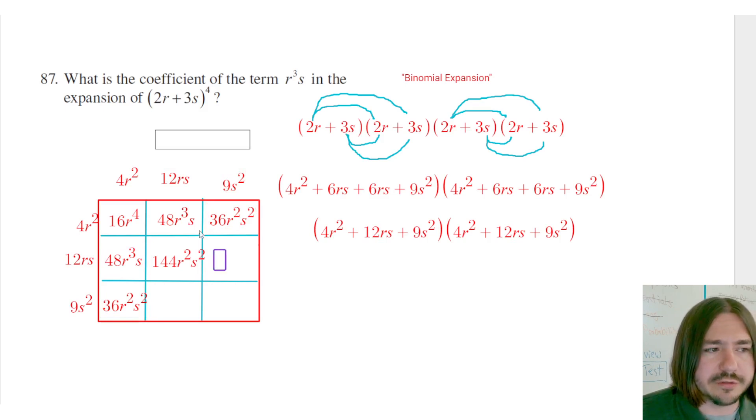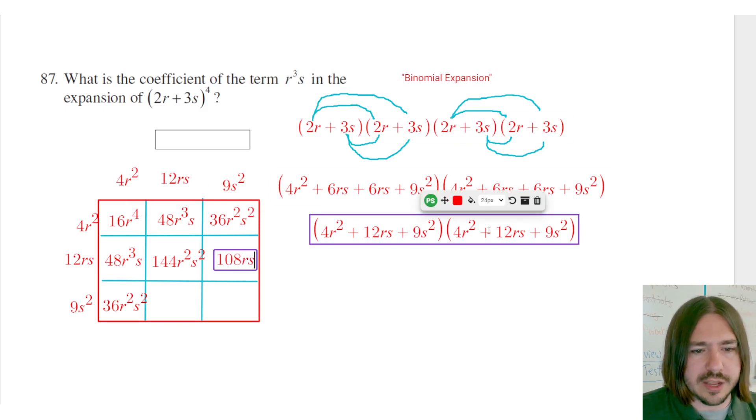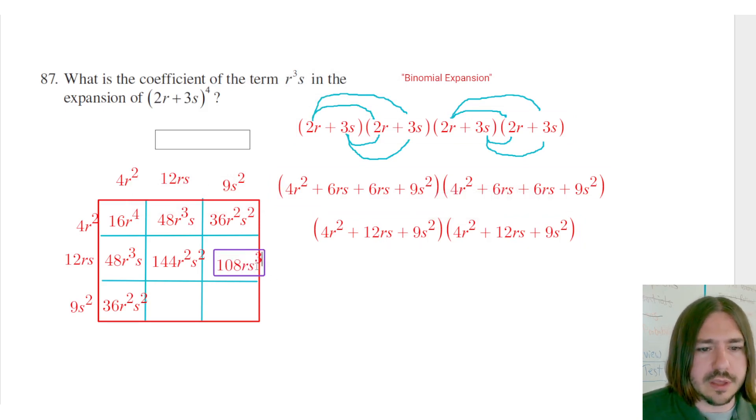9 times 12, well, let's see, 10 times 12 would be 120 minus 12 would be 108. So 108rs cubed. And that should be the same thing if I multiply it in the other direction. 12 times 9 is still 108.